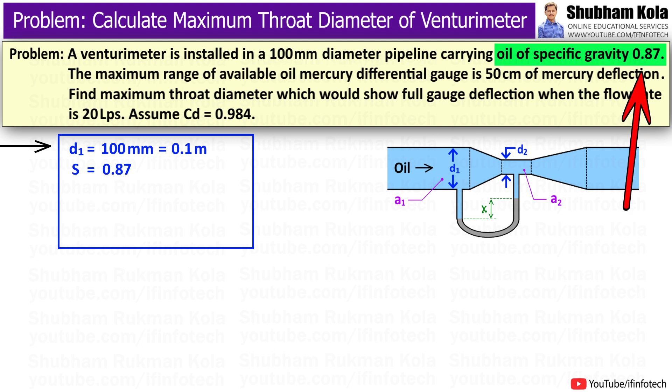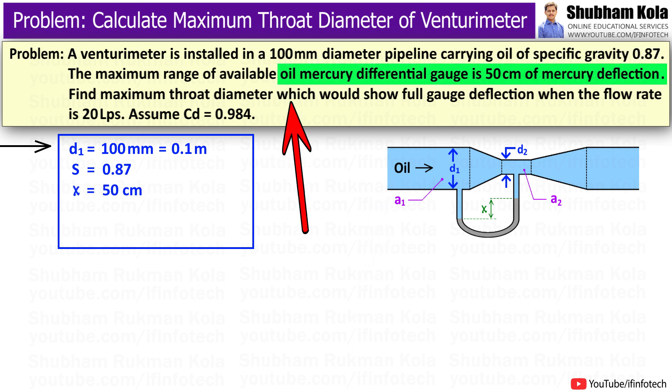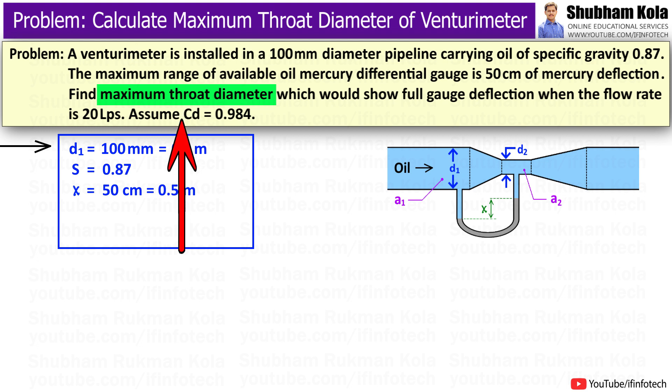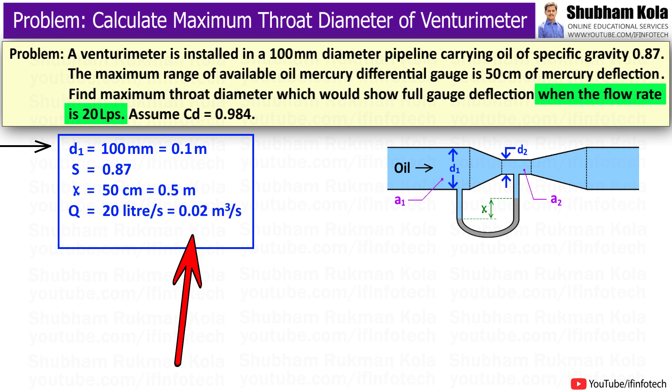The oil of specific gravity 0.87 is flowing inside the pipe. The oil-mercury differential manometer shows reading of 50cm of mercury deflection, that is x equal to 0.5m. We want to find out maximum throat diameter of venturimeter when the flow rate is 20 liters per second which is equal to 0.02 m³ per second. And the value of coefficient of discharge CD is given as 0.984.